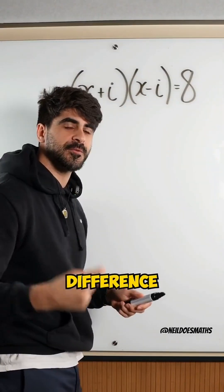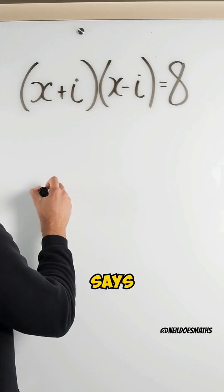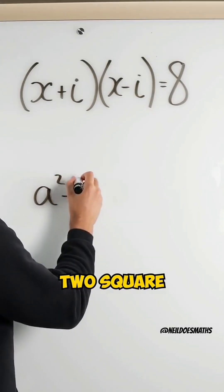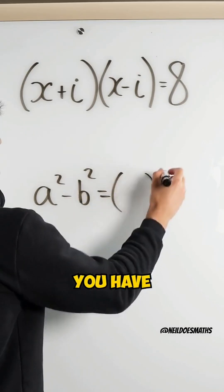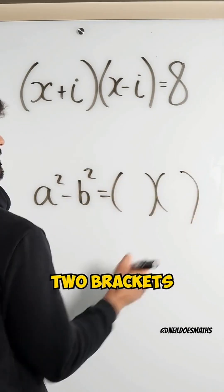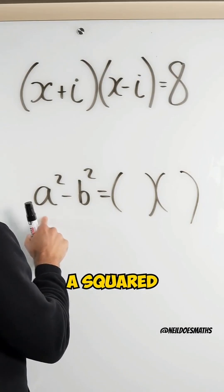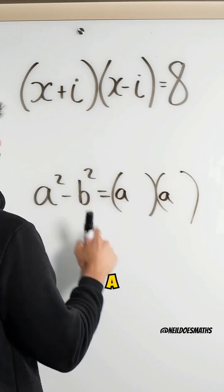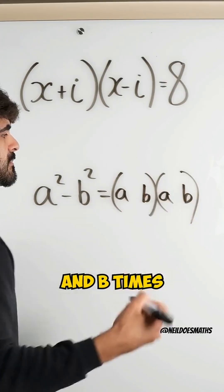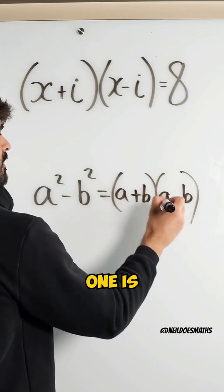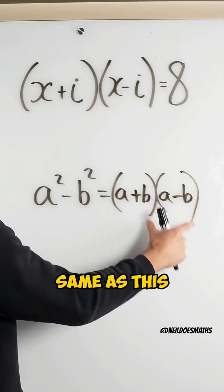It reminds me of the difference of two squares principle. The difference of two squares principle says if you have two square numbers subtracted, to factorize this, you have two brackets — you root both of these numbers. What times by itself to give you a squared is a; what times by itself to give you b squared is just b. One is plus, one is minus. This is the exact same as this.